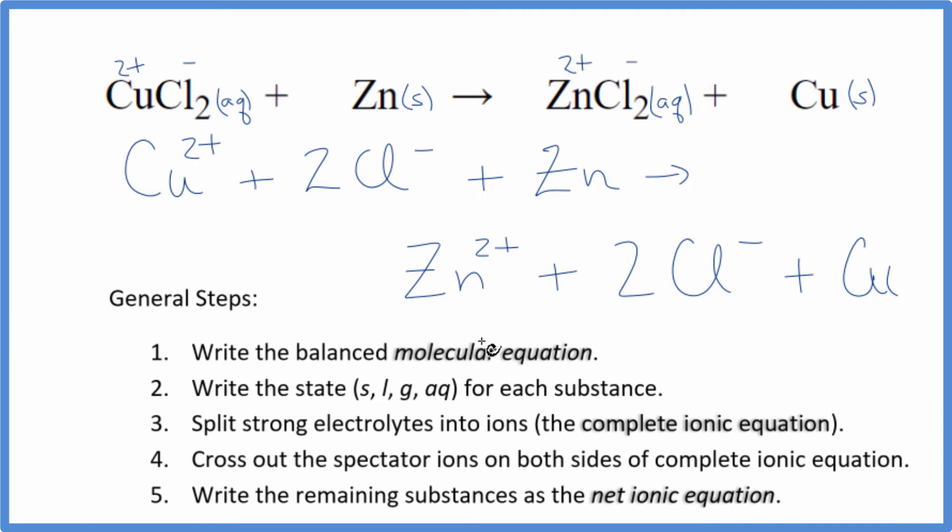This is our net ionic equation. Now we can cross out these spectator ions that are on both sides. In the reactants, I see I have two chloride ions right here and, again, in the products. So these are spectator ions. We can get rid of these, but everything else is unique.